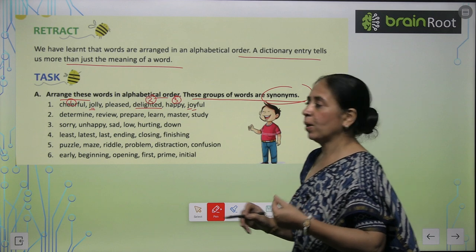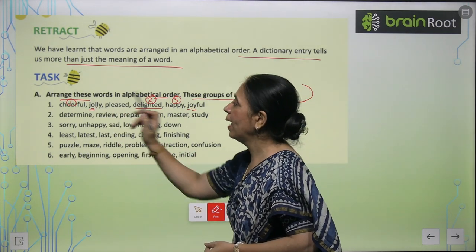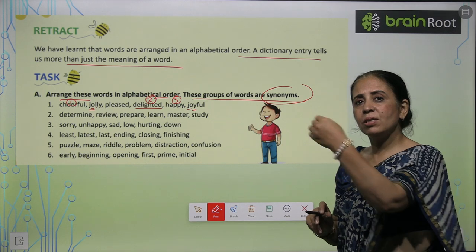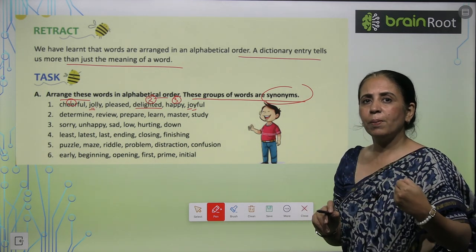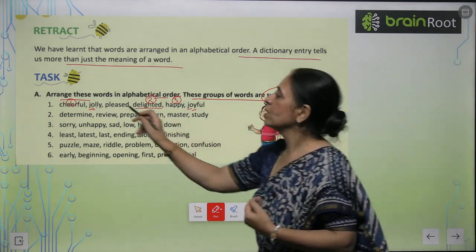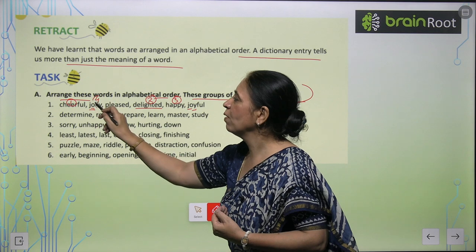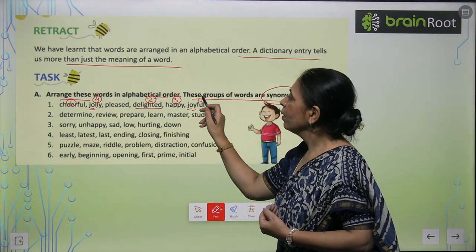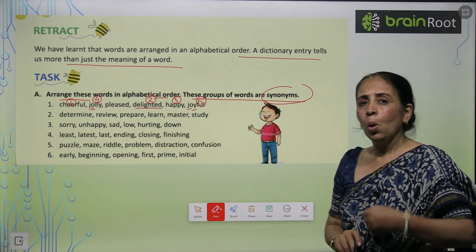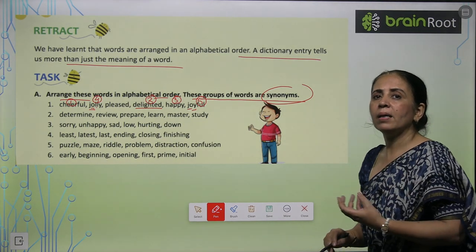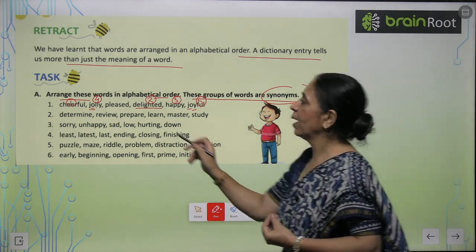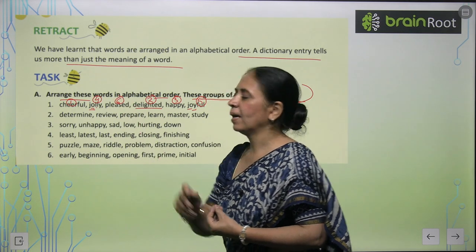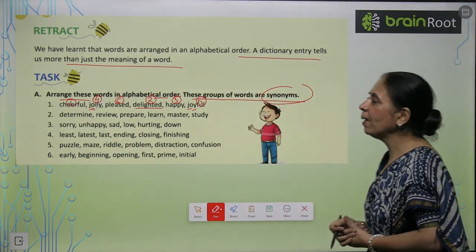So we will compare the third alphabet. In jolly, the third letter is L; in joyful, the third letter is Y. When you say A to Z, L comes before Y, so jolly will come at fourth number and joyful will come at fifth number. And the last — sixth number — that is pleased. Interesting way!